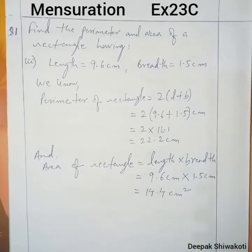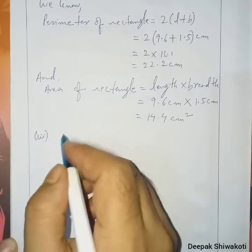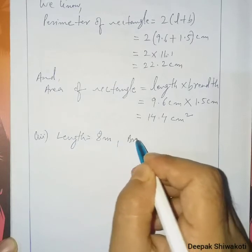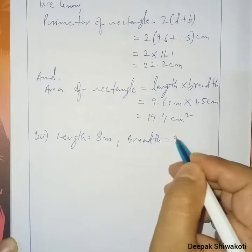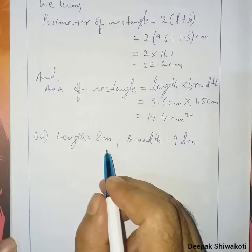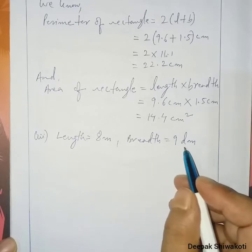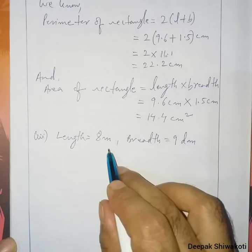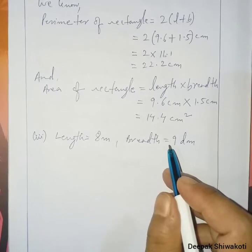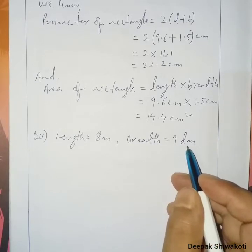Number 3: length is given as 8 meter and breadth is equal to 9.6 decimeter. Here is a problem — one is in meter and the other is in decimeter. While solving, we need the same units, so we have to convert one of them.